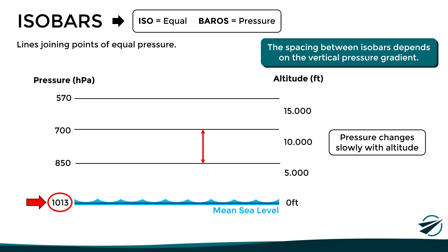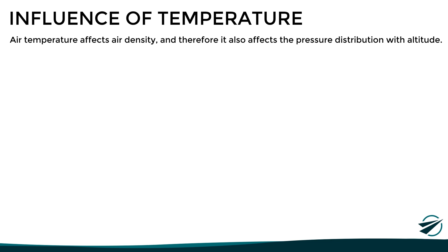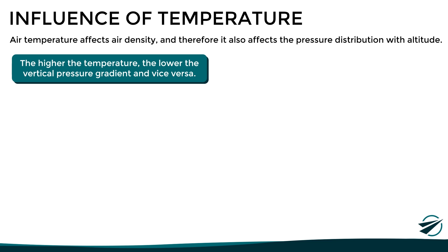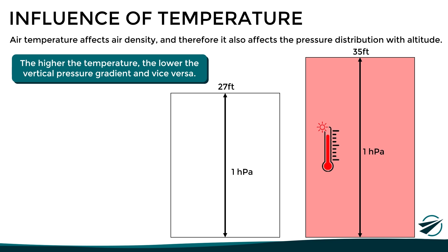In most cases, the spacing of isobars depends on air temperature, which affects air density and therefore the pressure distribution with altitude. In general terms, the higher the temperature, the lower the vertical pressure gradient, and vice versa. Under standard temperature conditions at sea level, pressure is reduced by 1 hectopascal for every 27 feet — the standard vertical pressure gradient. However, if the temperature is higher than standard, the air expands and has a lower density, causing the pressure to reduce more slowly with altitude — in this example, 1 hectopascal for every 35 feet.